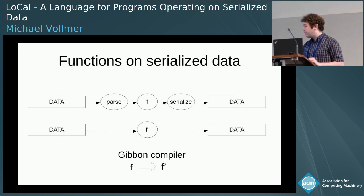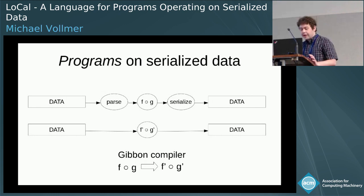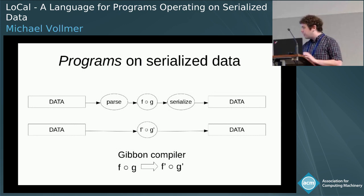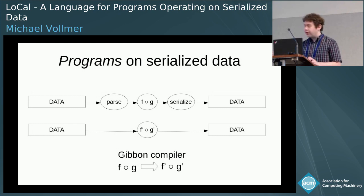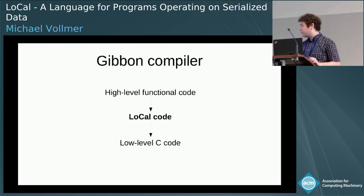The Gibbon compiler, which I'm going to be talking about today, is a compiler that takes F to F prime. More generally, imagine instead of just F, we had F composed G, or some arbitrary program — it might return a different data type than it accepts, it might do some internal allocation. Gibbon is more generally a whole-program compiler that transforms a program operating on recursive data into a program that operates on serialized data. The design of the Gibbon compiler looks roughly like this: we start with high-level functional code, translate that into LOCAL — which is the subject of this talk — a type-safe intermediate language for representing operations on serialized data, and then from there we generate low-level C code.